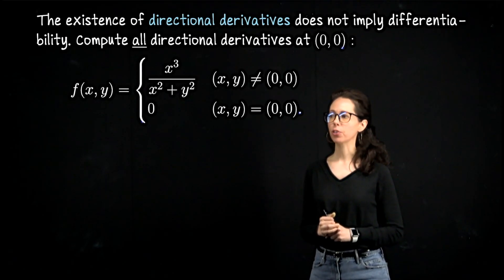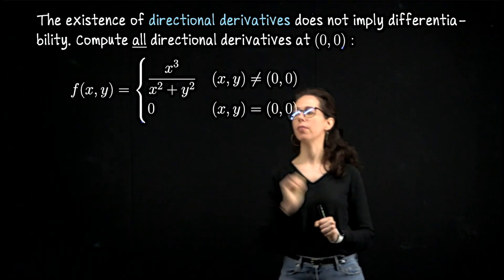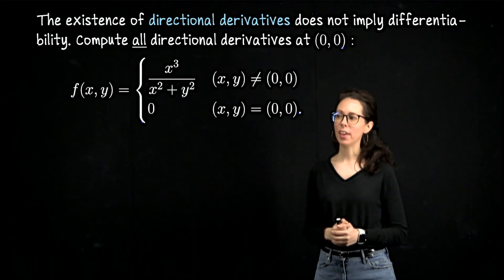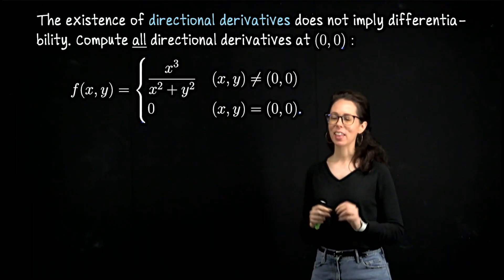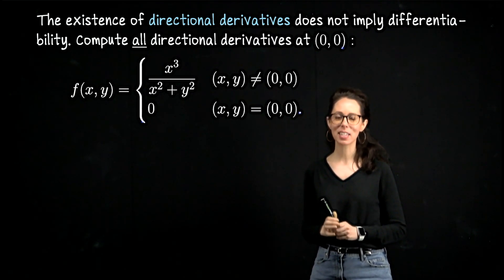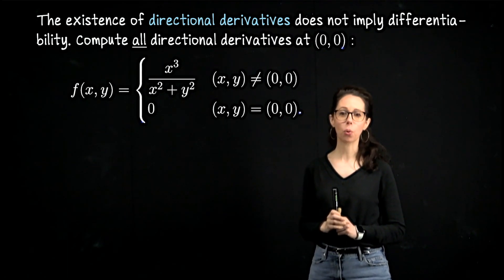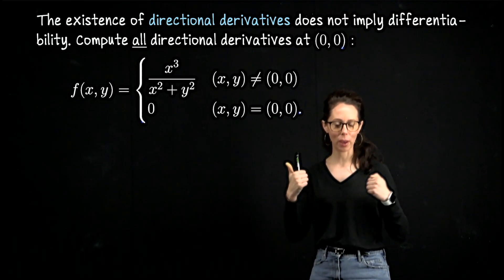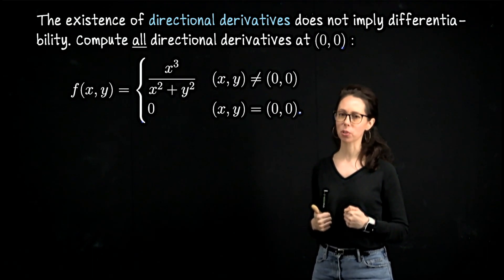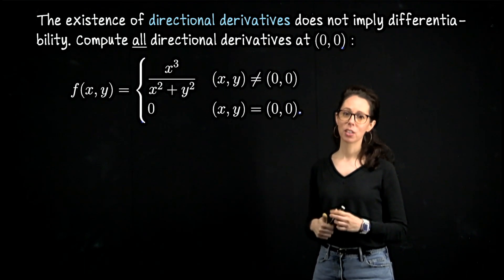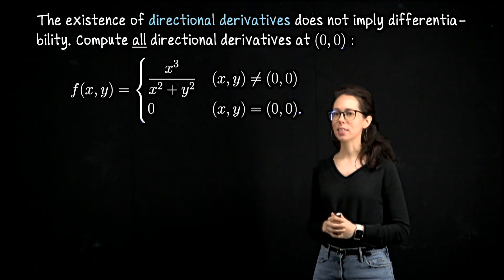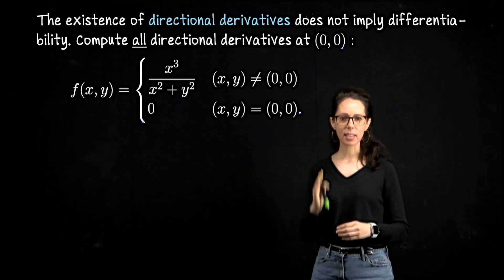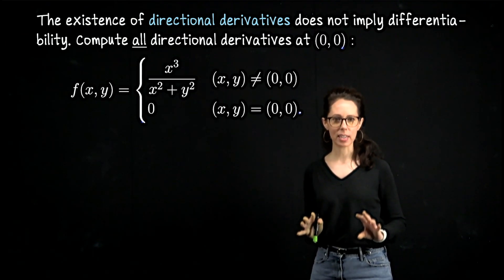In this exercise, I would like for us to take this piecewise defined function and compute all of its directional derivatives at the origin. Then we will show that even though all directional derivatives exist, the function still fails to be differentiable at the origin. So there are two goals to this video. The first is to show a way to systematically compute every possible directional derivative even though there are infinitely many. The second goal is to hammer home the message that the existence of partial derivatives does not guarantee differentiability.